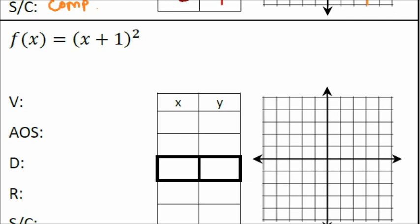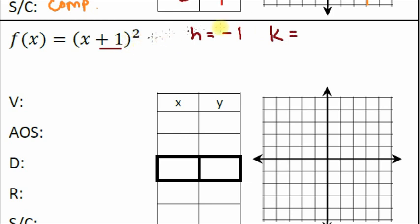Let's do another one. f(x) equals (x plus 1) squared. Identify h and k: our h value is from the (x + 1) term. Remember we flip the sign because vertex form has a minus, so h equals negative one. There's no k value written, which means k equals zero.